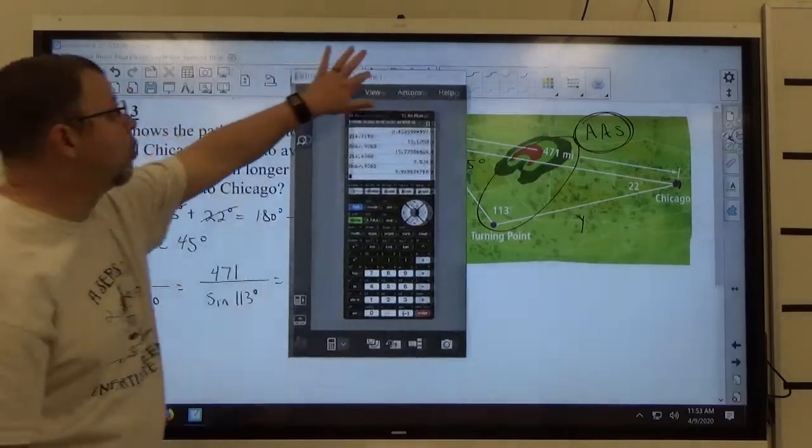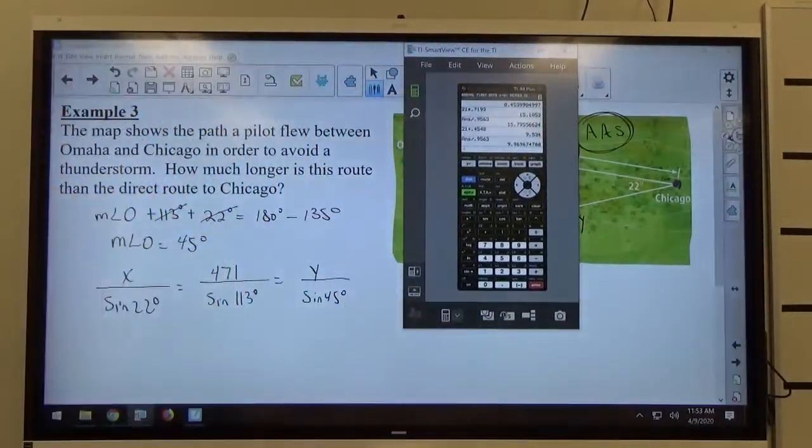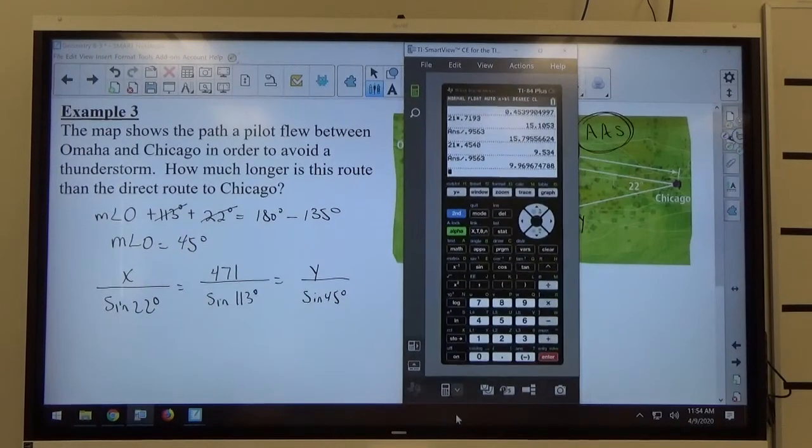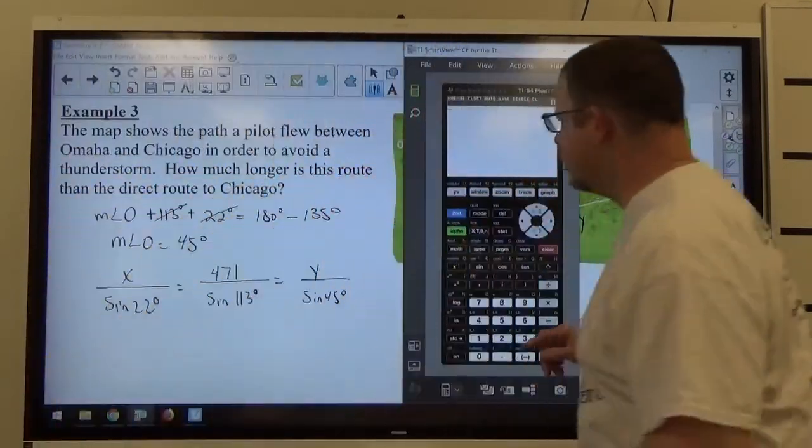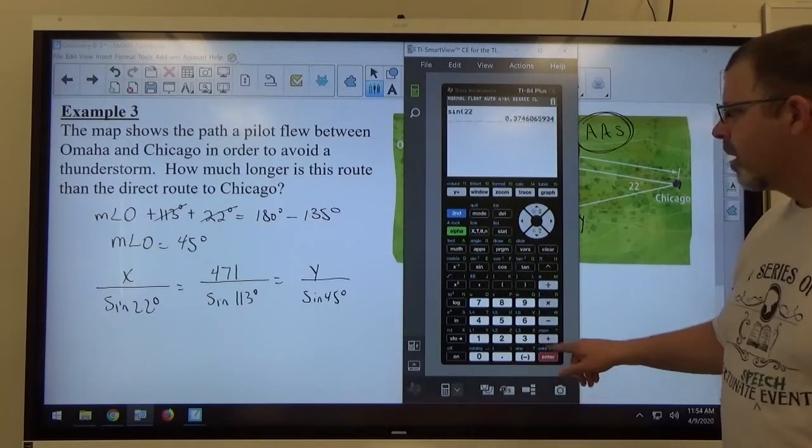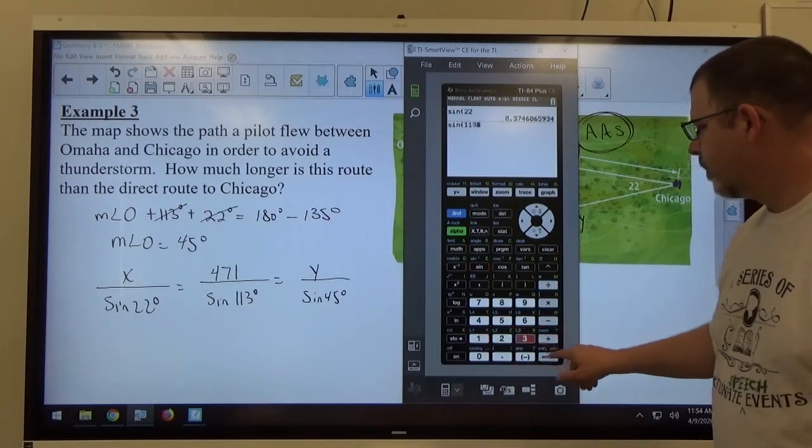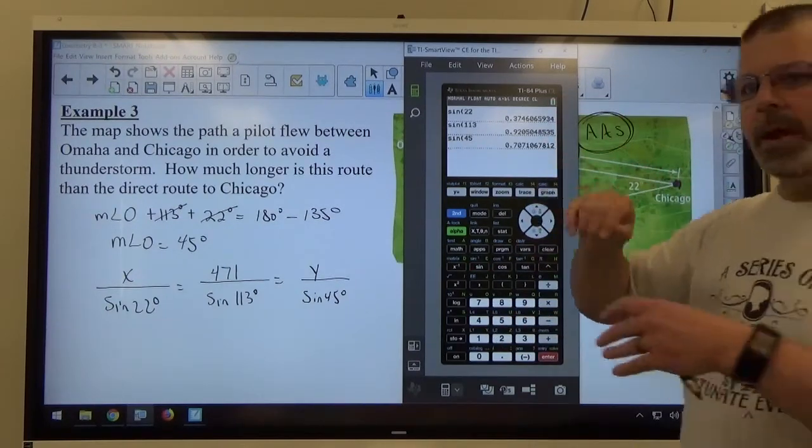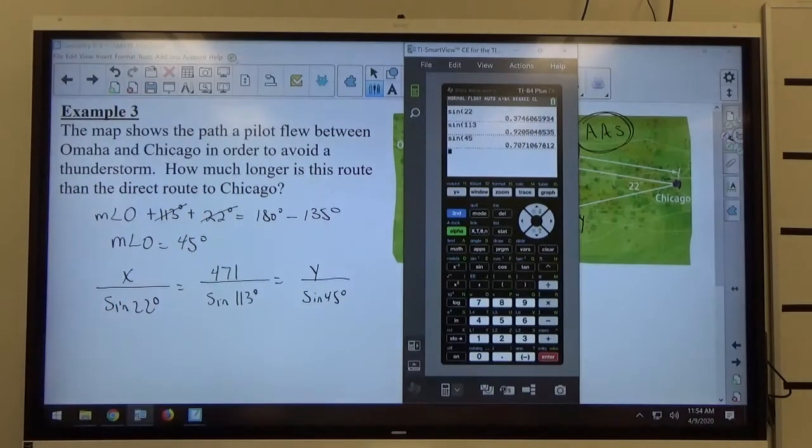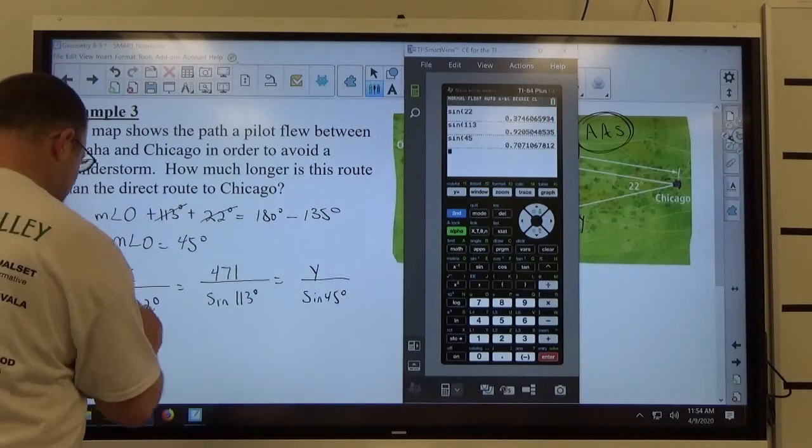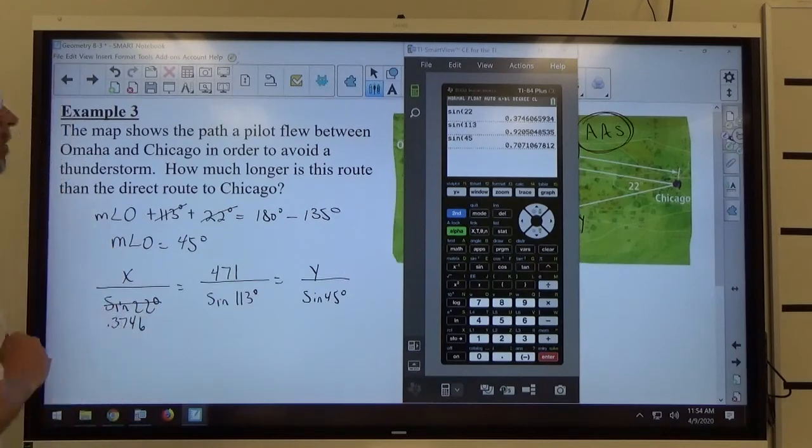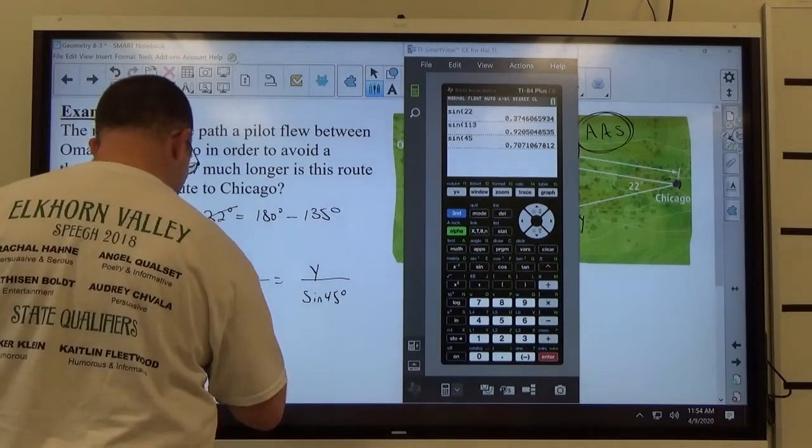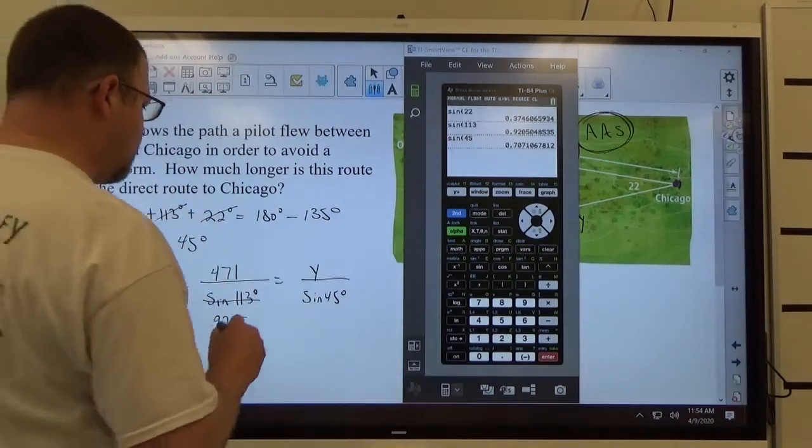Once again, my calculator can evaluate all those sine values for me. I'm going to make it a little bigger so it's easier to see. So if I type in sine 22 and sine 113 and sine 45, obviously on this screen I can see all three at the same time. On Google, you might have to record information as you get it. Sine of 22 is 0.3746. Sine of 113 is 0.9205. And sine of 45 is 0.7071.